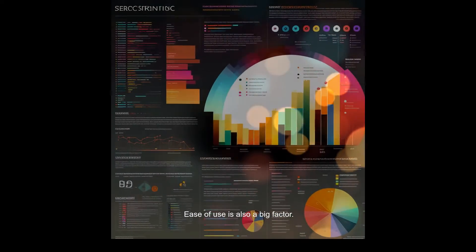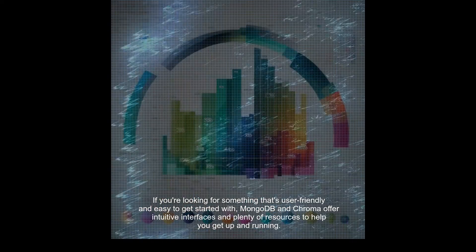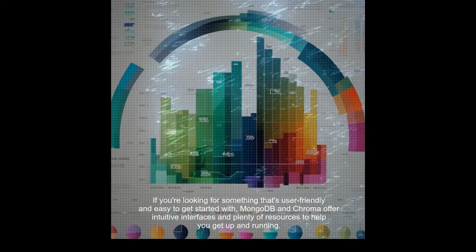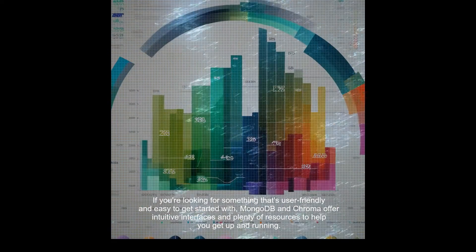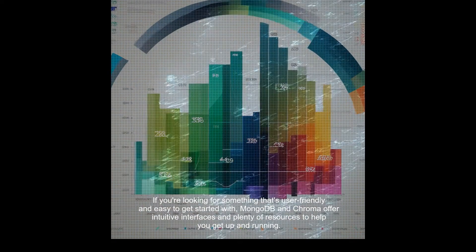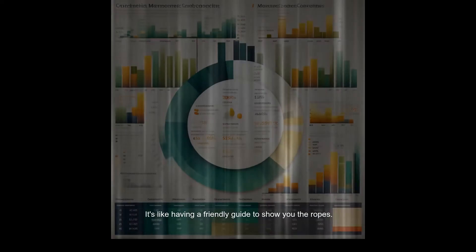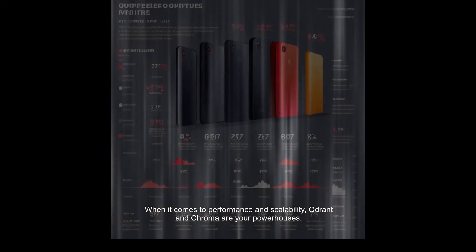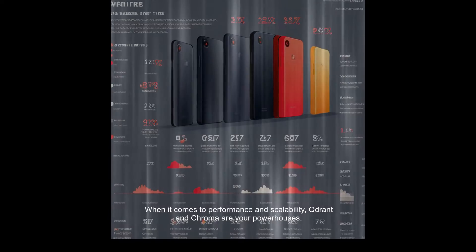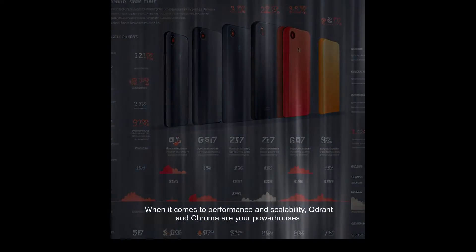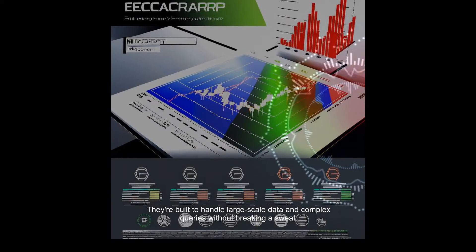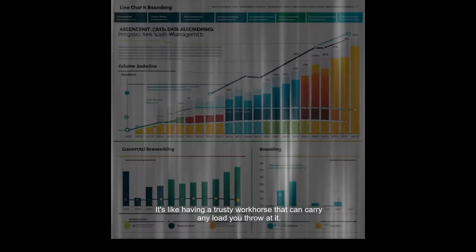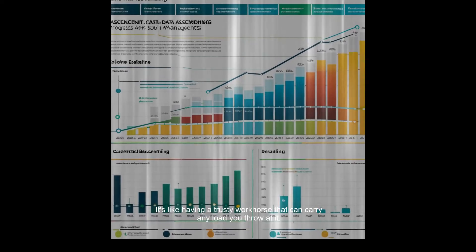Ease of use is also a big factor. If you're looking for something that's user-friendly and easy to get started with, MongoDB and Chroma offer intuitive interfaces and plenty of resources to help you get up and running. When it comes to performance and scalability, Qdrant and Chroma are your powerhouses — built to handle large-scale data and complex queries without breaking a sweat.